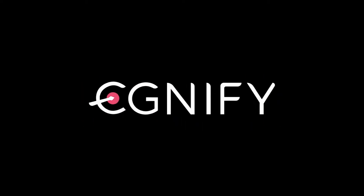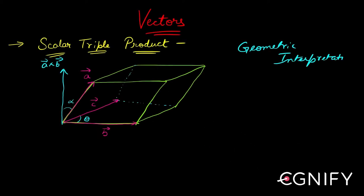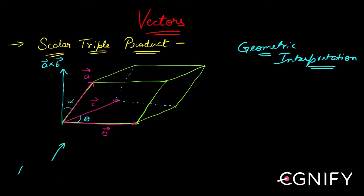Now we have to see the geometric interpretation. Just the way we have seen what dot product gives us geometrically and what cross product gives us geometrically, we also have to see what the scalar triple product gives us geometrically. This figure that I have here is called a parallelepiped.